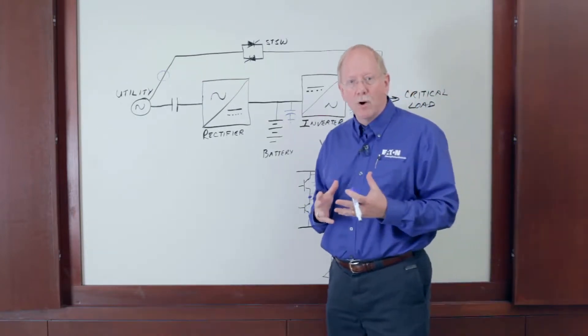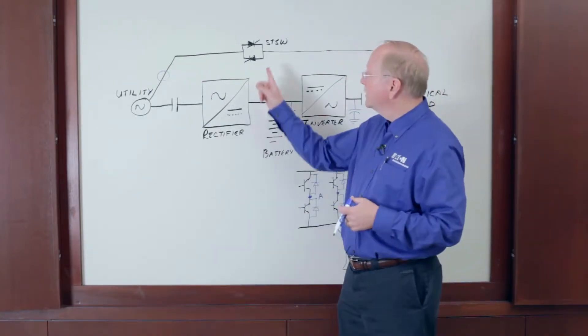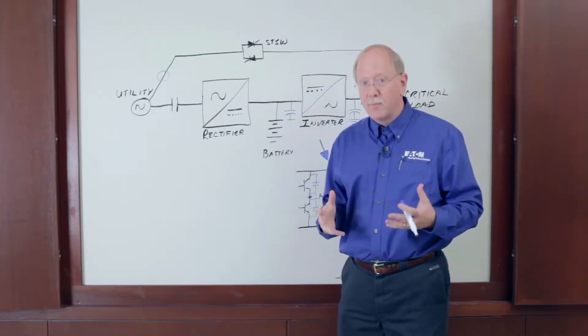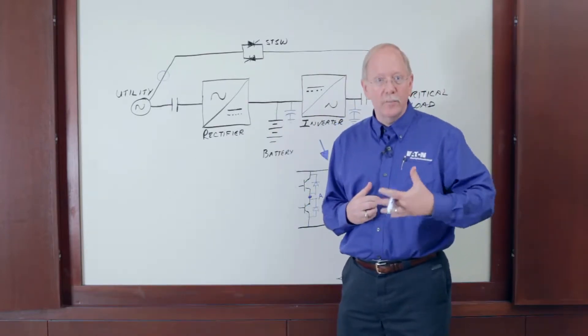So in traditional eco mode, the plan was to basically turn on the static switch and shut off the UPS. The problem was it takes too long to start a UPS from shutdown mode.